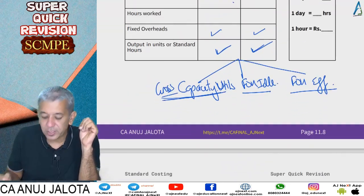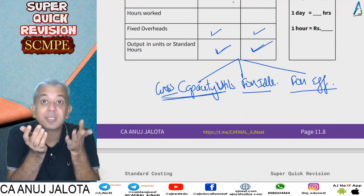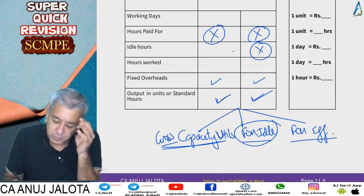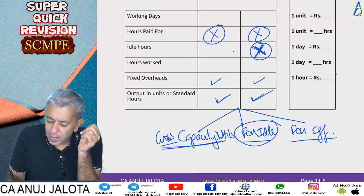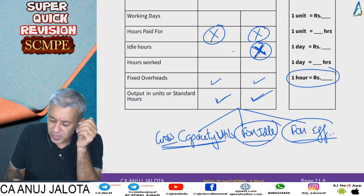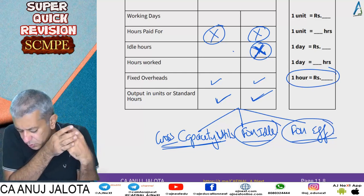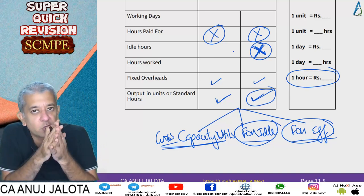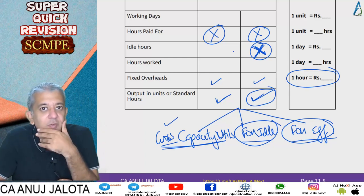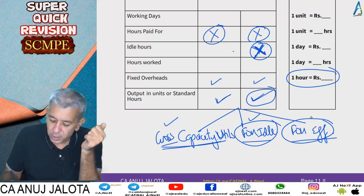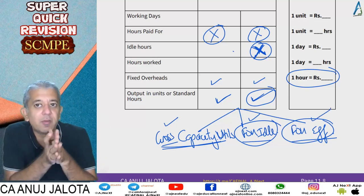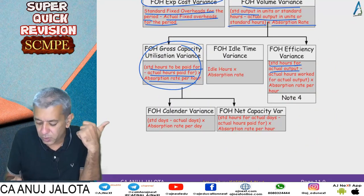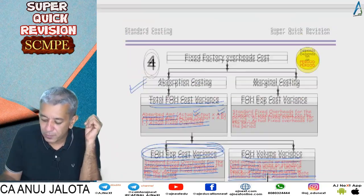Second reason units differ: workers came but wasted time due to idle time — that's the idle time variance, computed as idle hours × absorption rate per hour. Third reason: efficiency variance — for actual output, how many hours should have been taken versus how many were actually taken. Formula: standard hours for actual output minus actual hours worked, multiplied by absorption rate per hour.